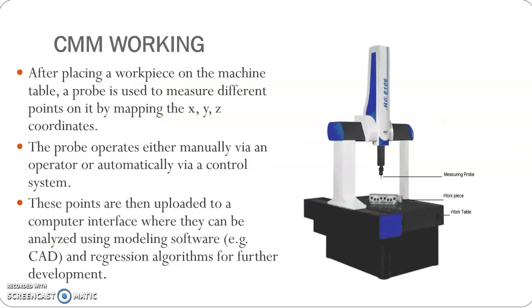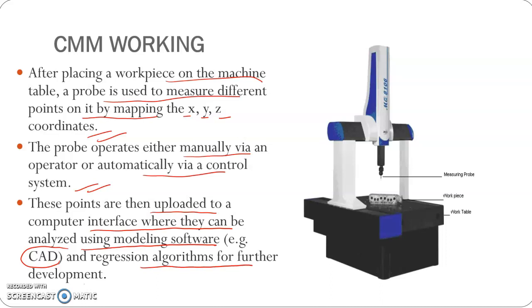We can conclude the CMM working like this: after placing the workpiece on the machine table, a probe is used to measure different points on it by mapping the X, Y, Z coordinates. The probe operates either manually via an operator or automatically via a control system. These points are then uploaded to a computer interface where they can be analyzed using modeling software, example CAD, and regression algorithms for further developments.